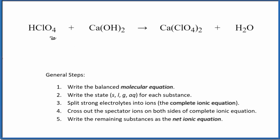In this video, we'll write the net ionic equation for HClO4 plus Ca(OH)2. This is perchloric acid and this is calcium hydroxide. This is a strong acid. This is a strong base. We have a neutralization reaction here.